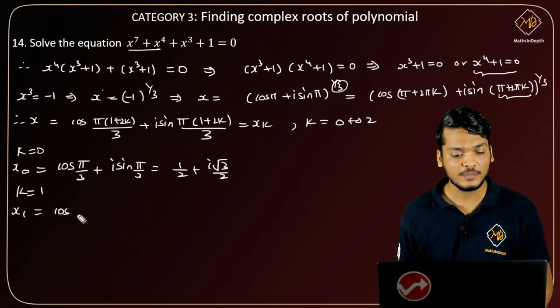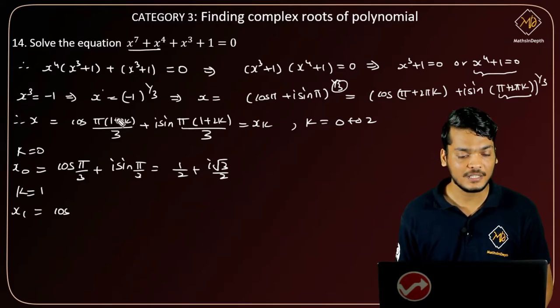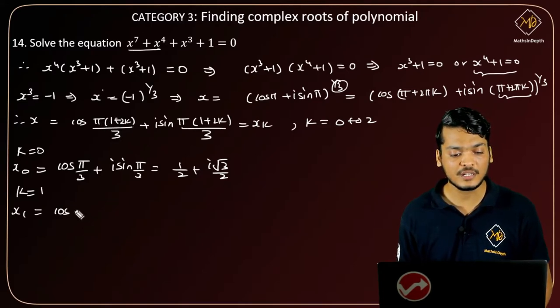Then for k equals to 1, I'll get x_1. Putting one in the formula, the answer will be cos of 2 plus 1 that is 3, and cos 3 pi by 3, the 3s cancel out, answer is cos pi plus i sine pi, which is equal to minus 1.